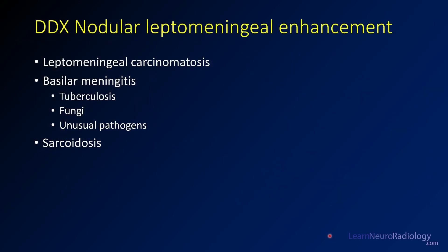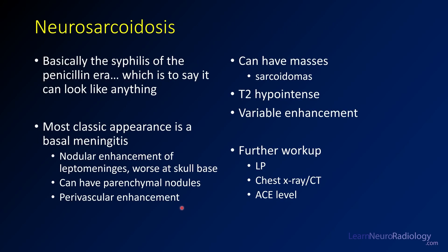For nodular leptomeningeal enhancement, the three main differential considerations are: leptomeningeal metastatic disease or carcinomatosis; meningitis or infectious process (usually unusual pathogens like tuberculosis or fungal disease); and sarcoidosis. This is a case of sarcoidosis, which is like syphilis in that it can look like many different things and have many manifestations.